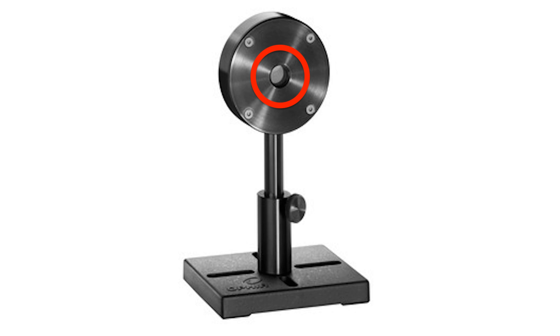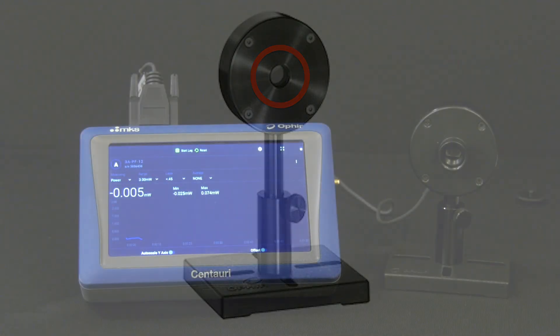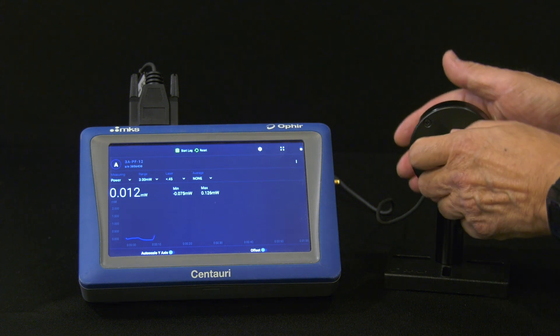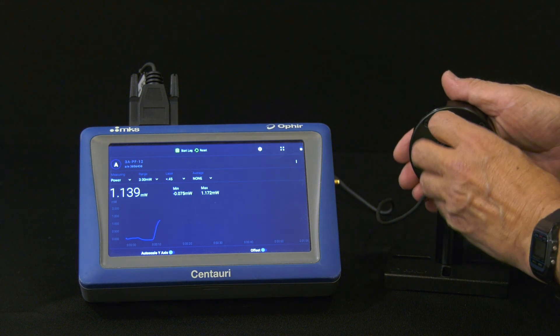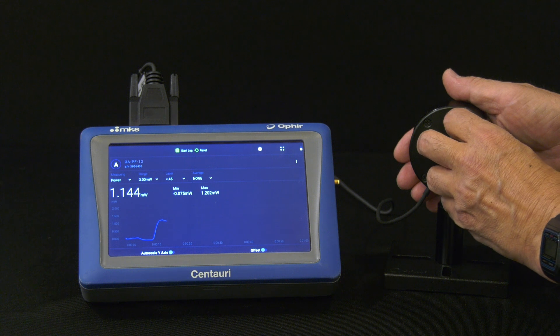So again, making sure to fully capture the beam is a challenge. There's less angle dependence than for photodiodes, but it's still an issue. Also, thermal sensors are obviously sensitive to heat. High-sensitivity models are very sensitive to heat and can pick up even body heat.